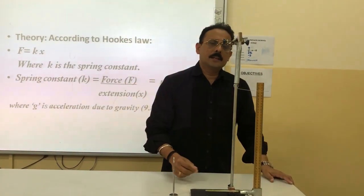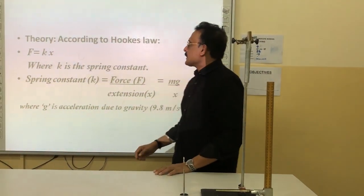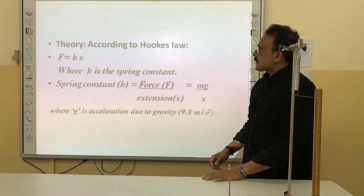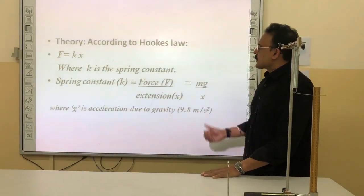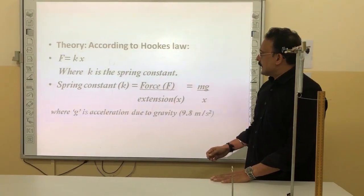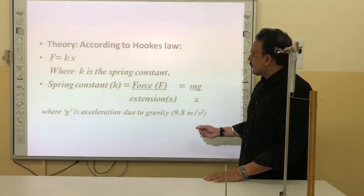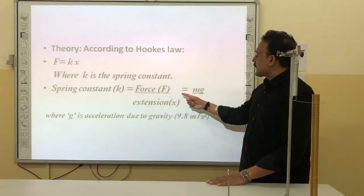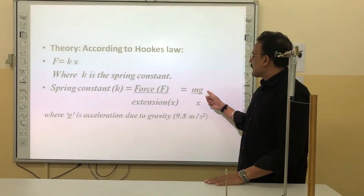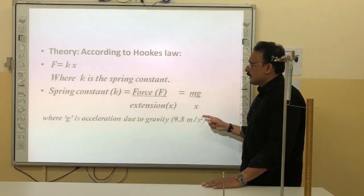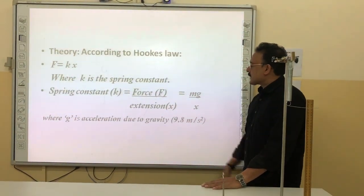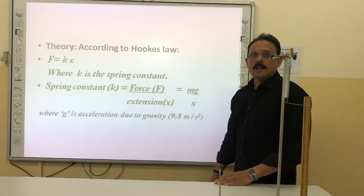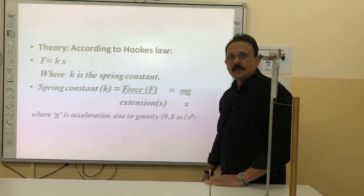According to Hooke's law, F is equal to kx, where k is the spring constant. The spring constant k is equal to force F divided by extension x. Force F can be written as mg, so k equals mg divided by x, where g is the acceleration due to gravity with a value of 9.8 meters per second squared.